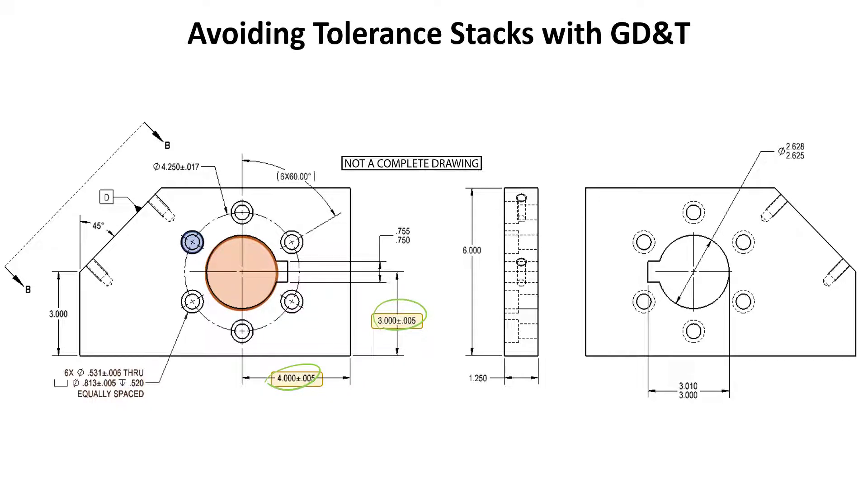And we also have that bolt hole located with a diametric tolerance on the bolt circle of four point two five zero plus or minus seventeen thousandths. And some sort of angular tolerance, depending on how you interpret the drawing.